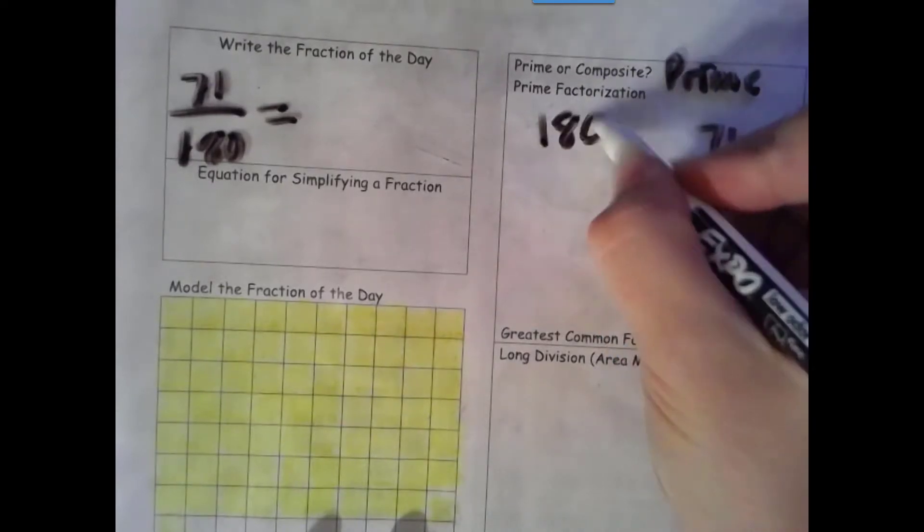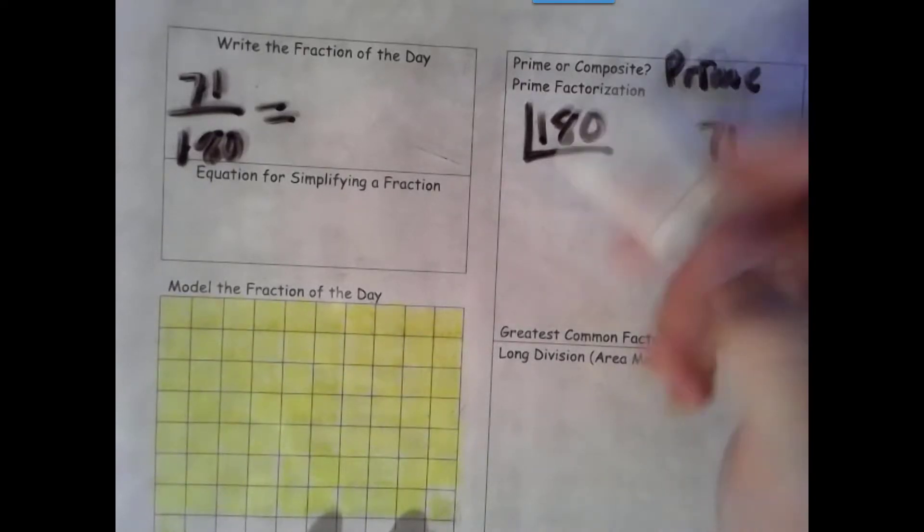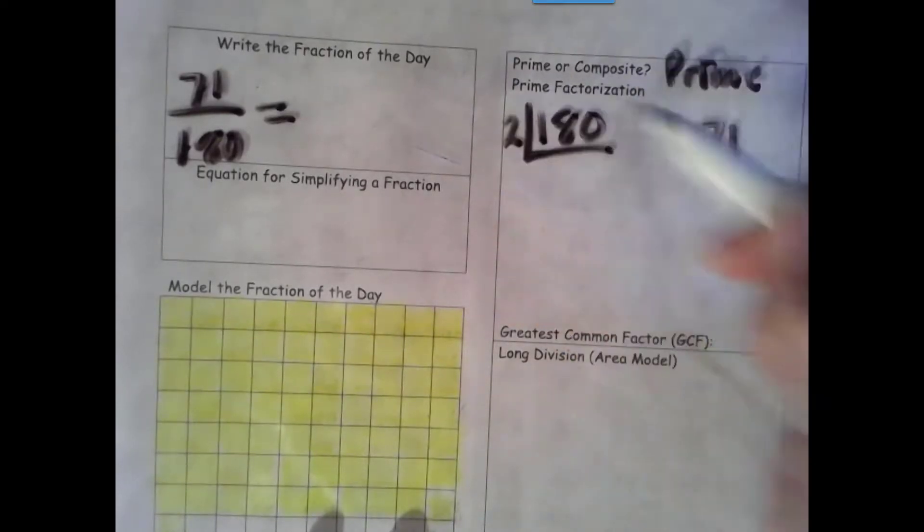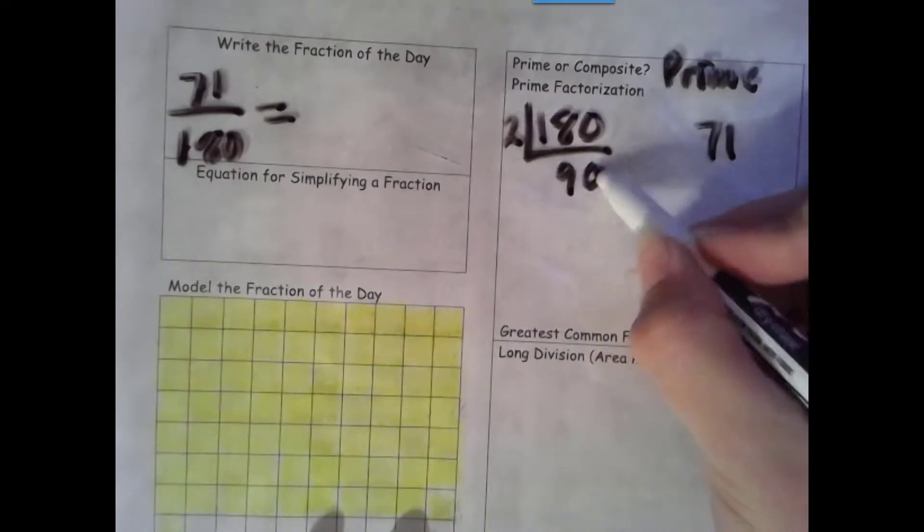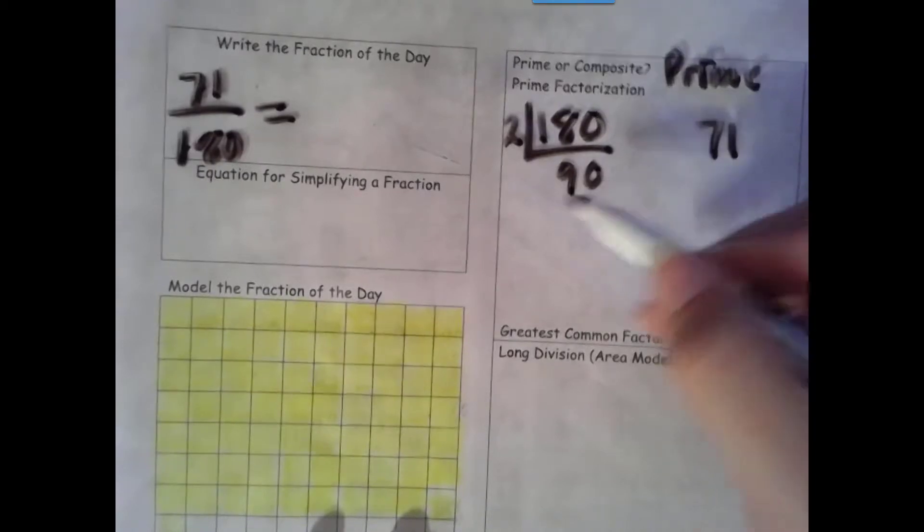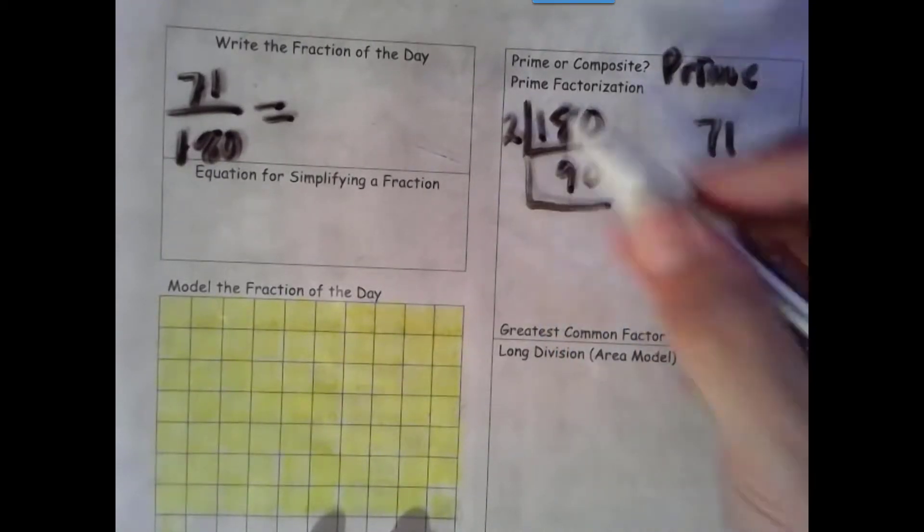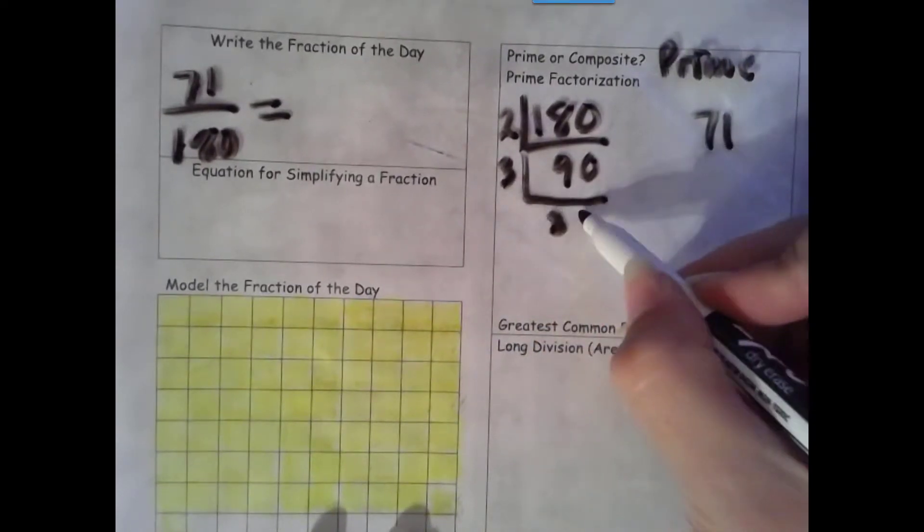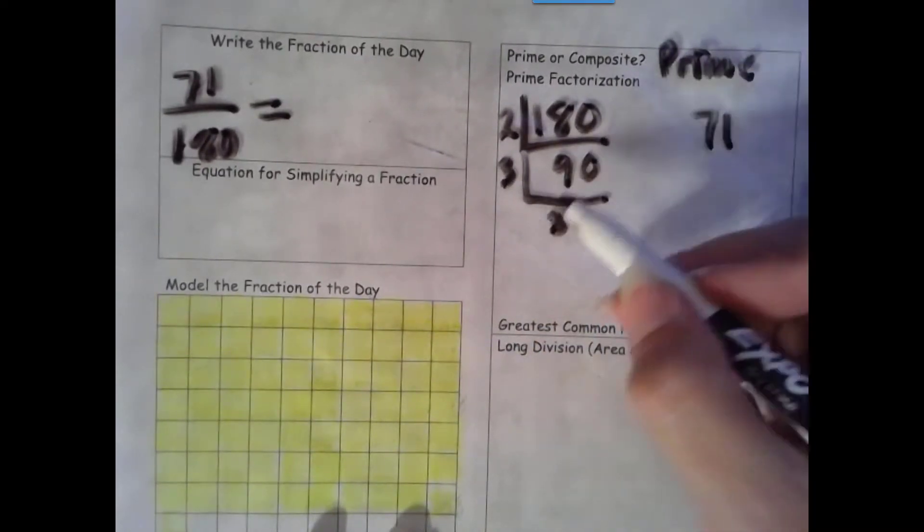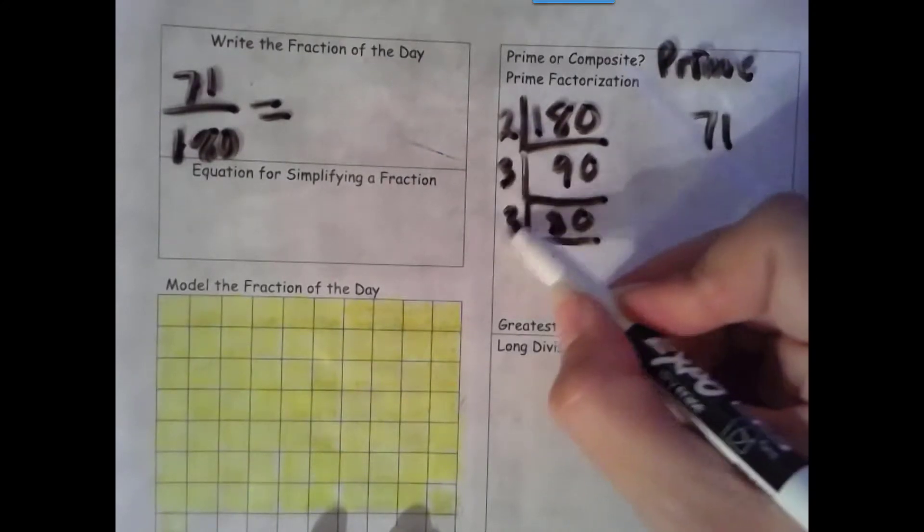So we just have to do the prime factorization for our denominator. Let's see, it is even, so I can divide by 2. Half of 18 tens is 90 tens. Okay, 9 plus 0 is 9, that's a multiple of 3, so I can divide by 3. I can get 30 groups of 3 out of 90. I can divide by 3 again, I get 10. That's even, I can divide by 2, I get 5.